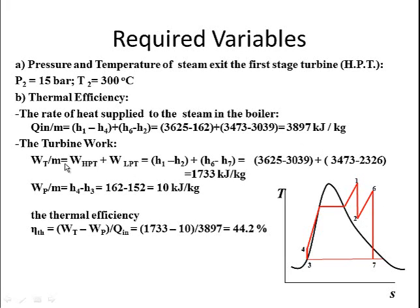For the turbine work, we have two stages: the high pressure turbine from state 1 to 2, and the low pressure turbine from state 6 to 7. The total turbine work is 1733 kJ/kg. The pump work is approximately 10 kJ/kg. Applying the thermal efficiency formula — net work divided by heat supply — the cycle thermal efficiency comes out to 44.2%.